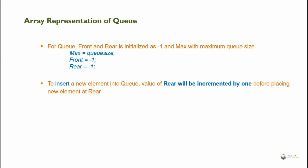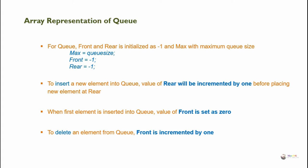To insert a new element into the Queue, the value of rear will be increased by 1 before placing the new element at rear. When the first element is inserted into the Queue, the value of front is set as 0. To delete an element from the Queue, front is increased by 1.